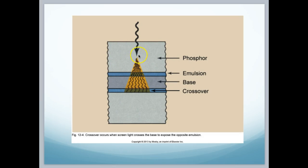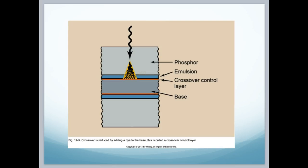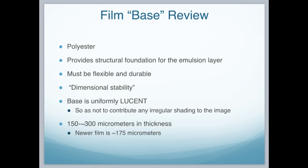We have a phosphor here with photons coming in, making a glow. If we didn't have a base that would stop that, the glow would cross over to the other phosphor and expose it differently — that image would be more magnified than this one. With the tint in the base layer, it's considered the crossover control layer, because it doesn't allow the phosphorescence of one side of the film to cross over to the other side. The film base is composed of polyester, giving it a good structural foundation for the emulsion layer. It must be flexible and durable, shouldn't shrink, keeping its dimensional stability. The base is uniformly lucent, 150 to 300 micrometers in thickness, and newer films are about 175 micrometers.